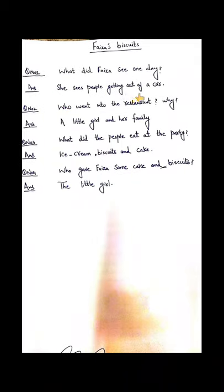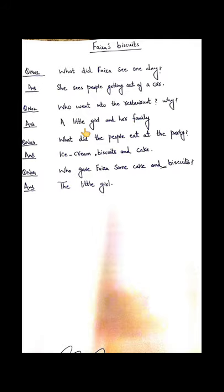She sees people getting out of a car. Question number two is: who went into the restaurant? Do you remember? It was a little girl and her family. A car stopped in front of the restaurant and a family came outside, so we will write: a little girl and her family.